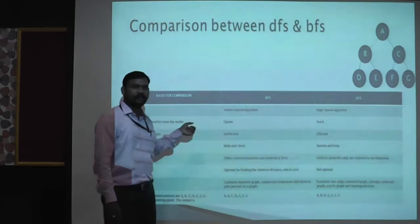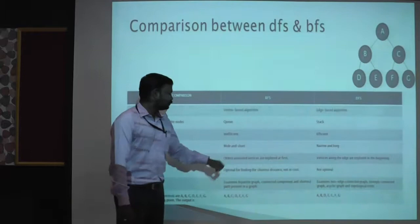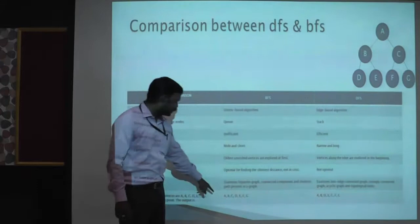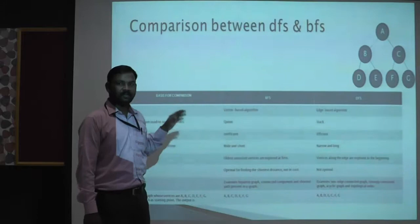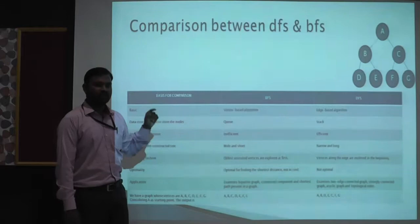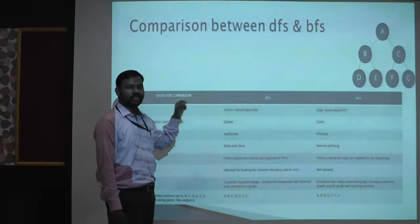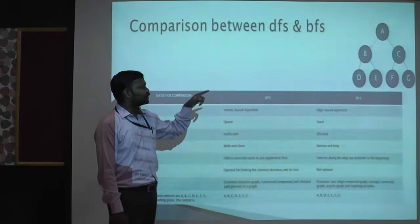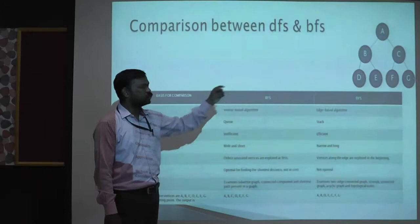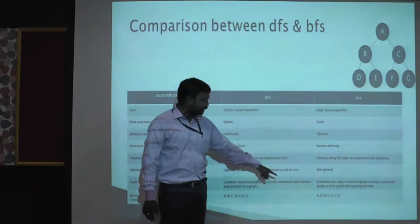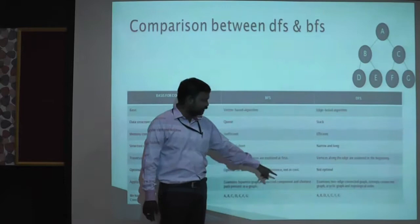Depth-first search is narrow and long because it keeps on iterating node-wise until the solution is found. In this example, in breadth-first search it will process A, then B and C, then D, E, F, G. In depth-first search, it will process A, then go to B, then go to D. After the end node is reached, it backtracks to B and goes to E. After there are no more nodes from B, it backtracks to A and proceeds to node C. After C, there are two options, F and G, so it proceeds to F. After F, there are no further nodes, so it backtracks and goes to G. The traversal order for breadth-first search is A, B, C, D, E, F, G, and for depth-first search it is A, B, D, E, C, F, G. Even though the order of iteration is different, both algorithms will visit each and every node.